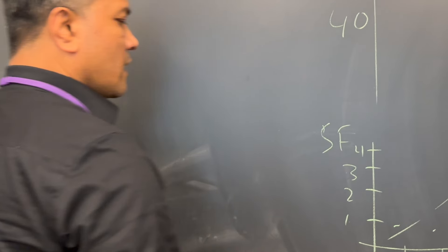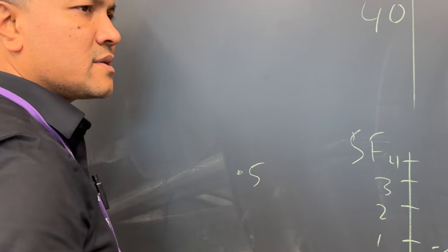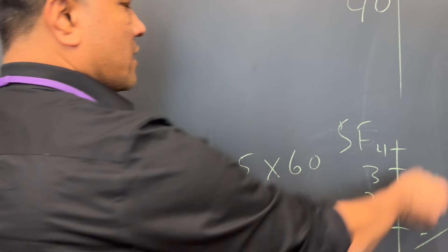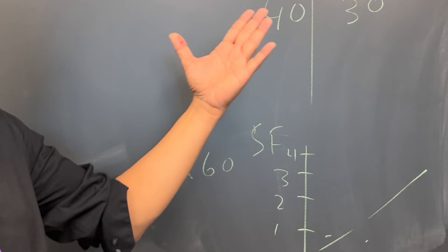You take the slope, right? And whatever the slope is, let's say slope is 0.5, you multiply by 60. So then you get 30. That's what you call the slope from the best fit line.